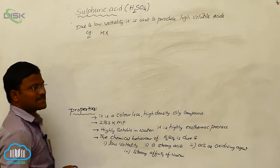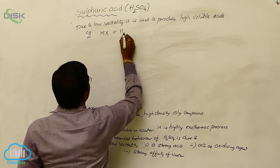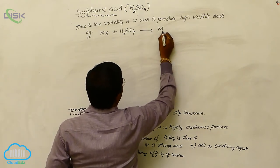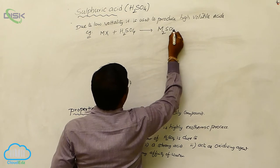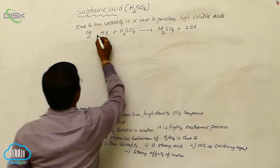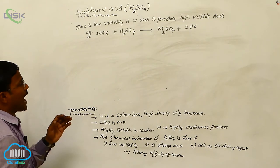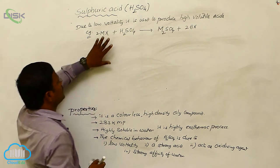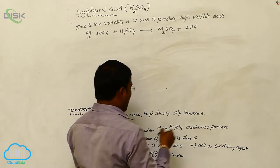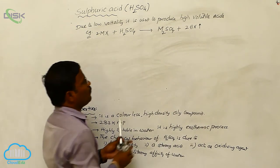Here M represents any metal. When metal halides react with sulfuric acid, they produce M2SO4 plus 2HX. That is, metal halides are converted into metal sulfates with the generation of hydrogen halides, which have a volatile character.